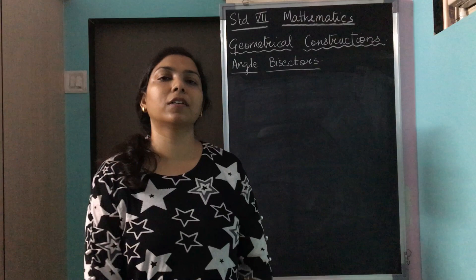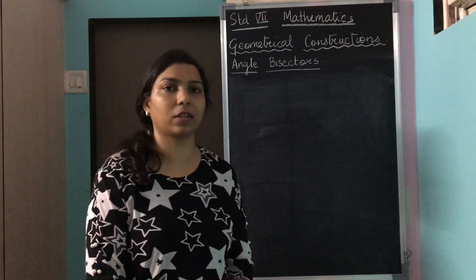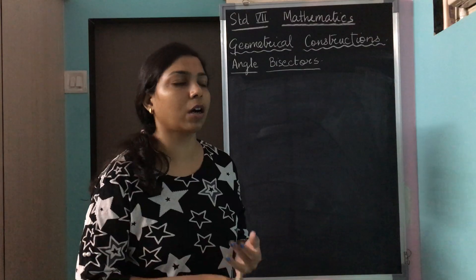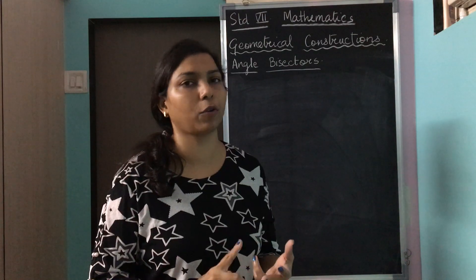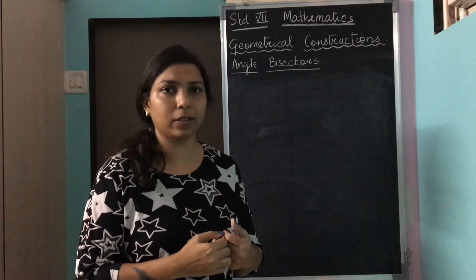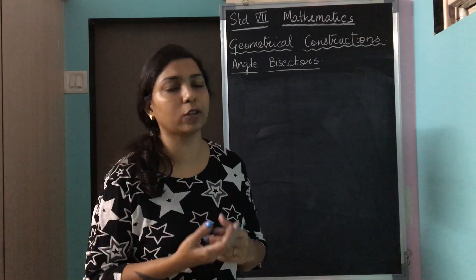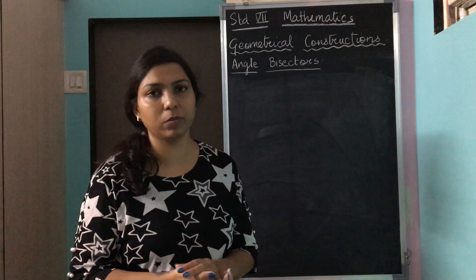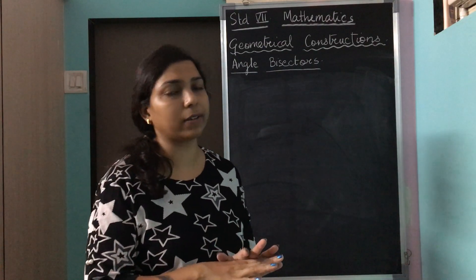Good morning, dear students, and welcome back to the next part of your chapter on geometrical construction. Last time we saw how to draw perpendicular bisectors for a given line. You also drew perpendicular bisectors for acute angle triangles, obtuse angle triangles, and right angle triangles. You found out the position of the circumcenter: in an acute angle triangle it is inside the triangle, in an obtuse angle triangle it lies outside, and in a right angle triangle it is on the triangle.